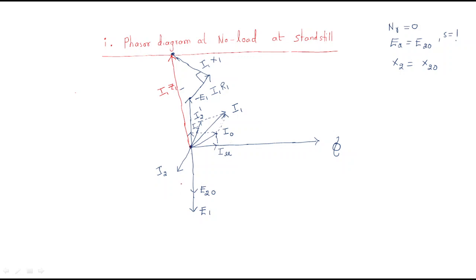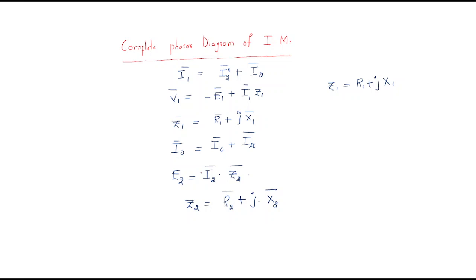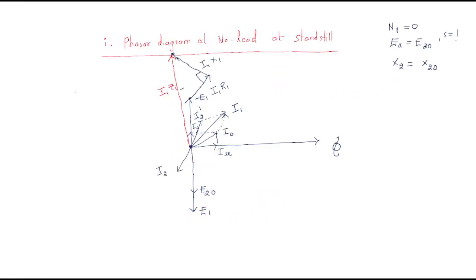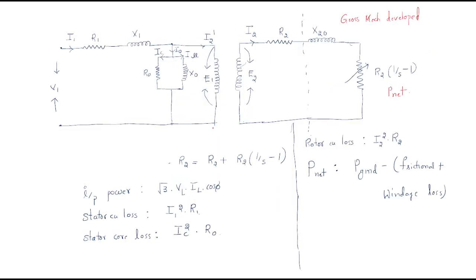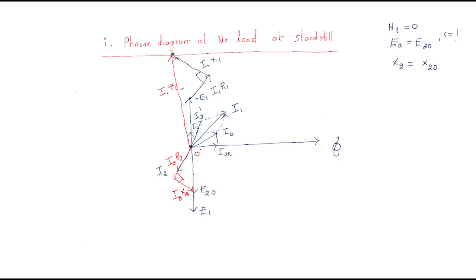For the rotor side, the combination of I2·r2 plus I2·X2 gives e2. We draw I2·r2, then I2·X2, and their combination gives I2·Z2. This is the phasor diagram at no-load and standstill condition. By using these fundamental laws and the equivalent circuit, we have drawn the complete phasor diagram. I hope all of you understand this session — thank you.